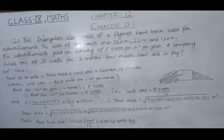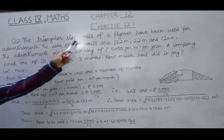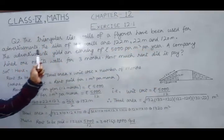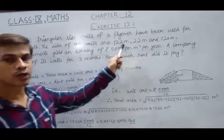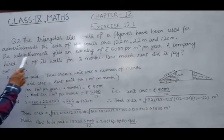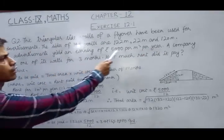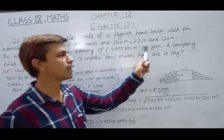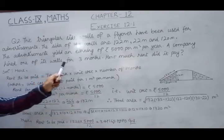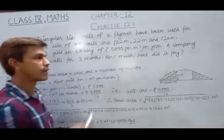Let's move on to question number 2. In that problem, the triangular side walls of a flyover have been used for advertisements. The sides of the walls are 122 meter, 22 meter and 120 meter. The advertisements yield an earning of Rs. 5000 per square meter per year. A company hired one of its walls for 3 months. How much rent did it pay?